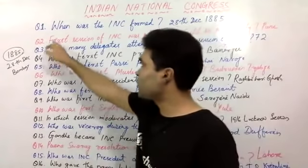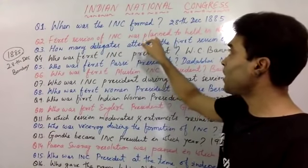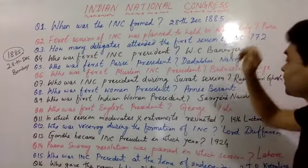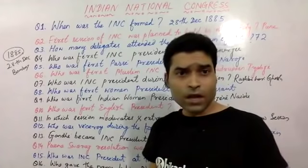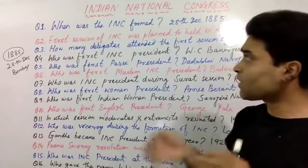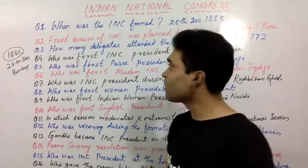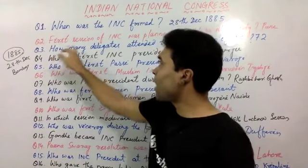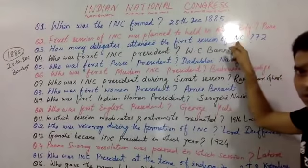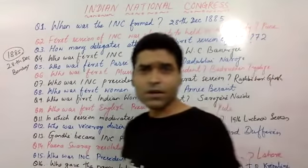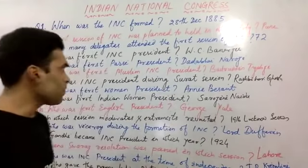Question number 2: the first session of Indian National Congress was planned to be held in which city? It was planned to be held in Pune, but it was actually held in Bombay or Mumbai. Question number 3: how many delegates attended the first session of Indian National Congress? The answer is 72. It is very, very important — 72 members attended the first session.